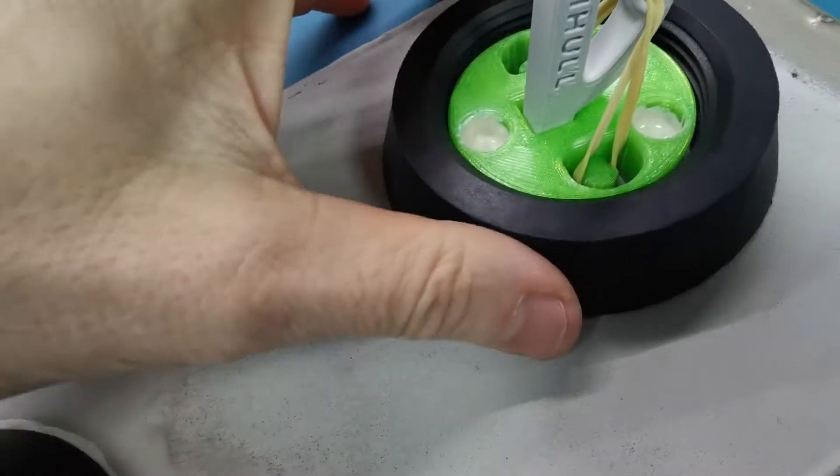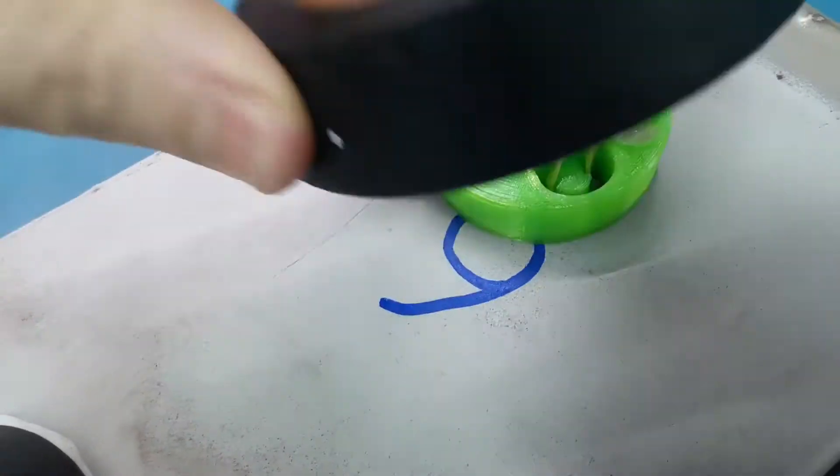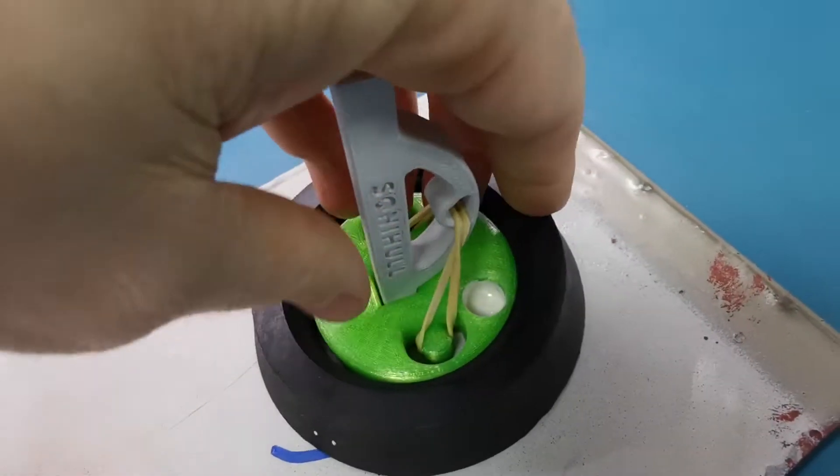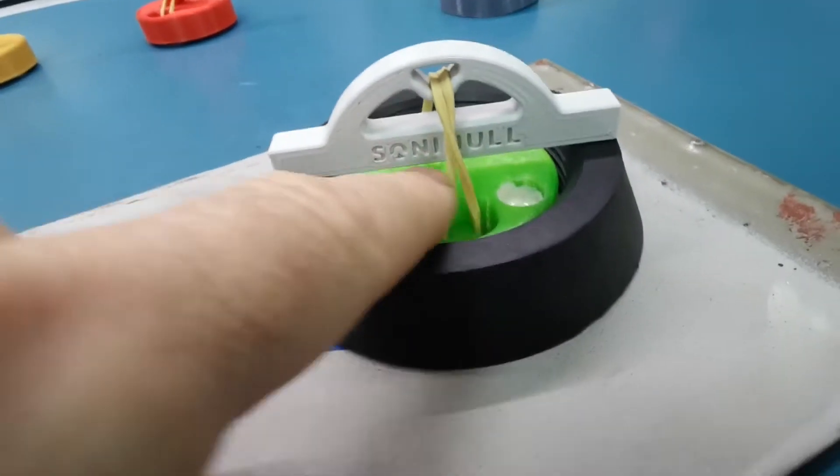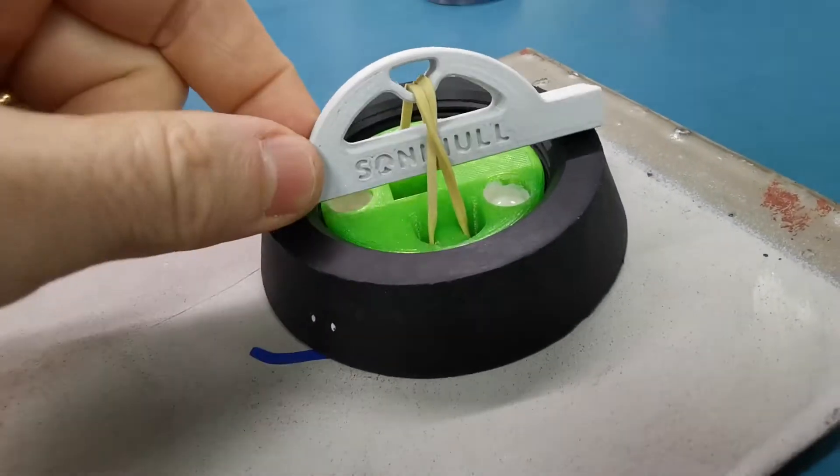So if any glue squeezes out it won't get underneath the ring. And I put our branding on the holder part, the stick part.